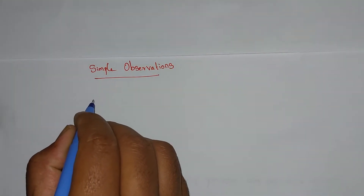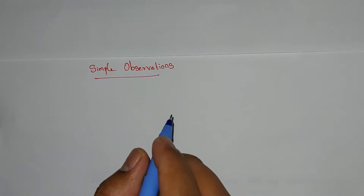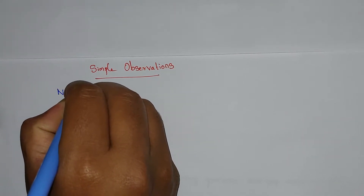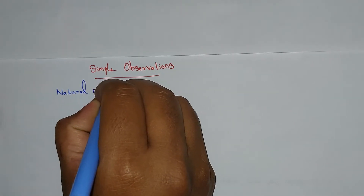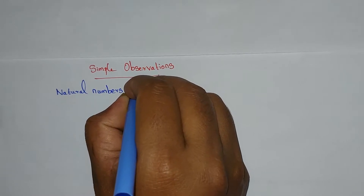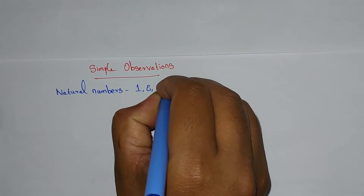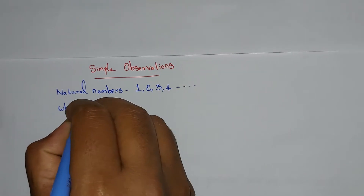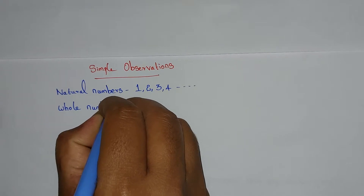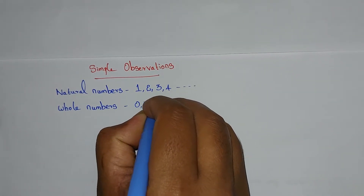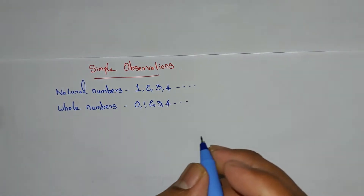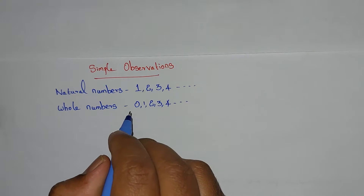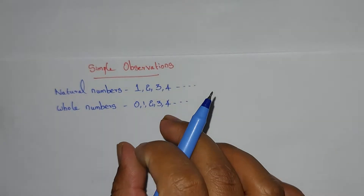Now let's note some simple observations. From the previous videos: natural numbers start from 1 — that is, 1, 2, 3, 4, 5 and so on. Whole numbers include 0 plus all the natural numbers, so 0 is the number that distinguishes whole numbers from natural numbers.